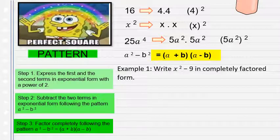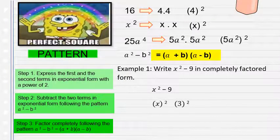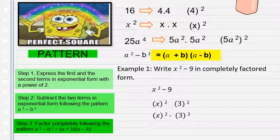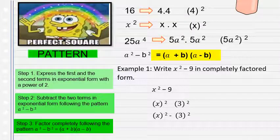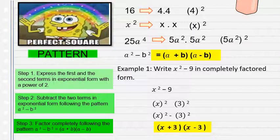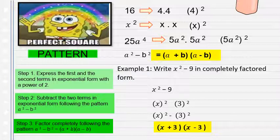Example 1: Write x squared minus 9 in completely factored form. Step 1: rewrite as x raised to 2 minus 3 raised to 2. Step 2: write the subtraction. Step 3: the factored form is (x plus 3)(x minus 3). That's very easy.